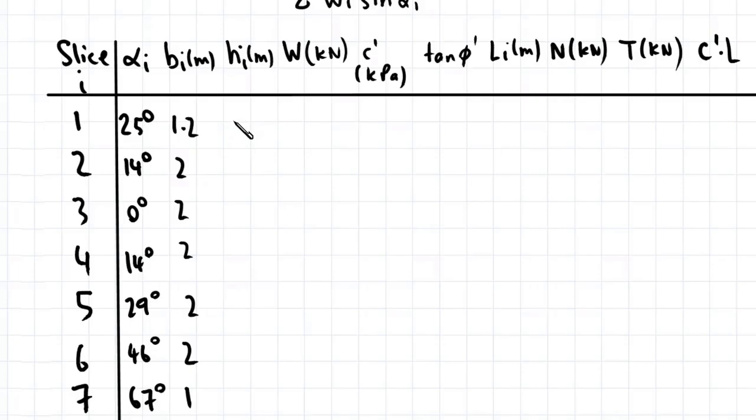And the average height of each slice. So the first one is 0.7, 2.2, 3.7, 4.7, 5.2, 3.6, and 1.3. Just note that these values may be different depending on how you draw the slip circle as well as how you determine the thickness of each slice.